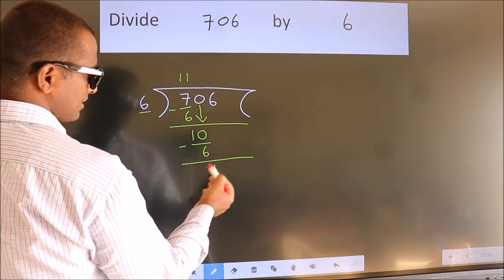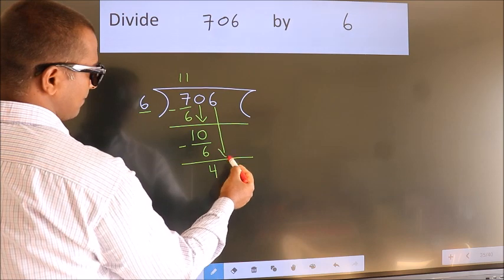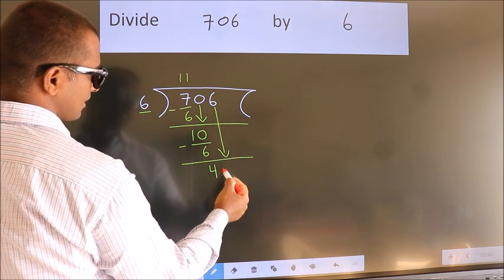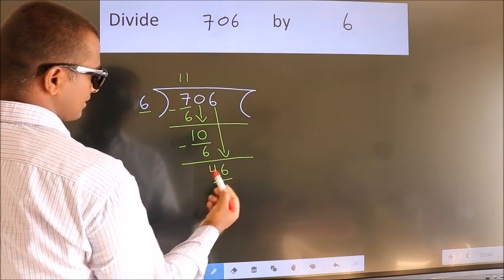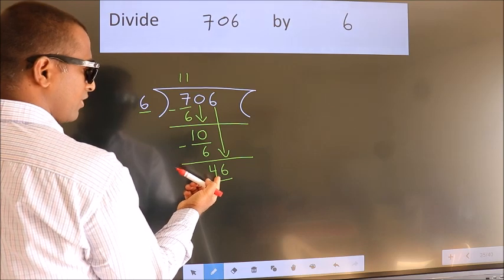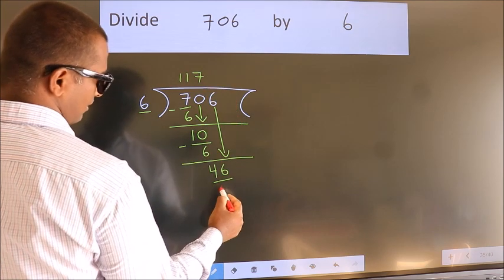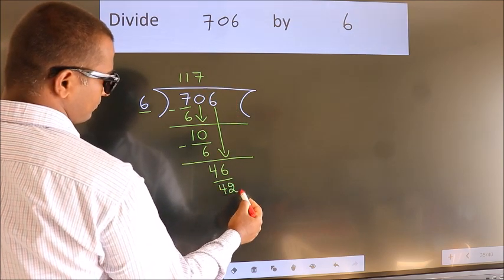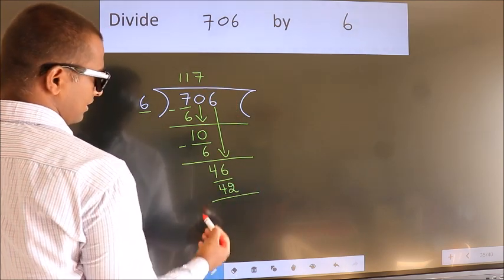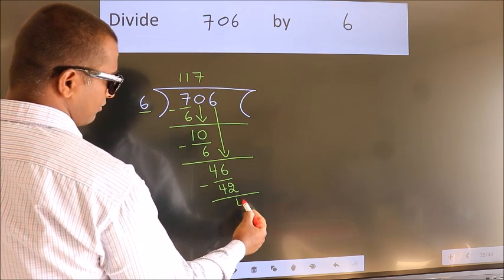After this, bring down the beside number, so 6 down, so 46. A number close to 46 in 6 table is 6 7s 42. Now we subtract, we get 4.